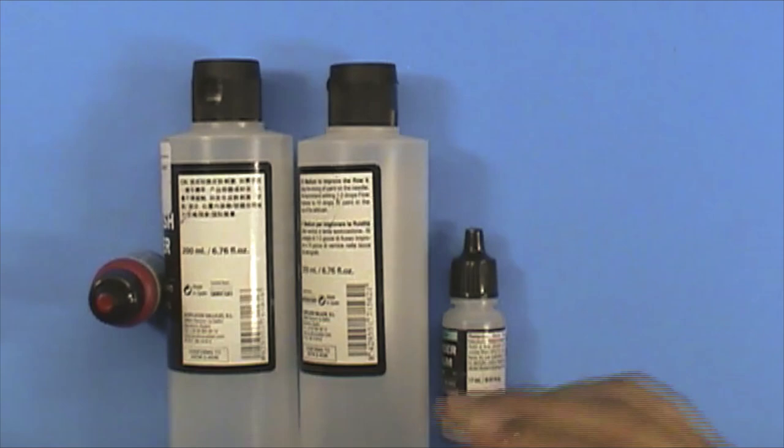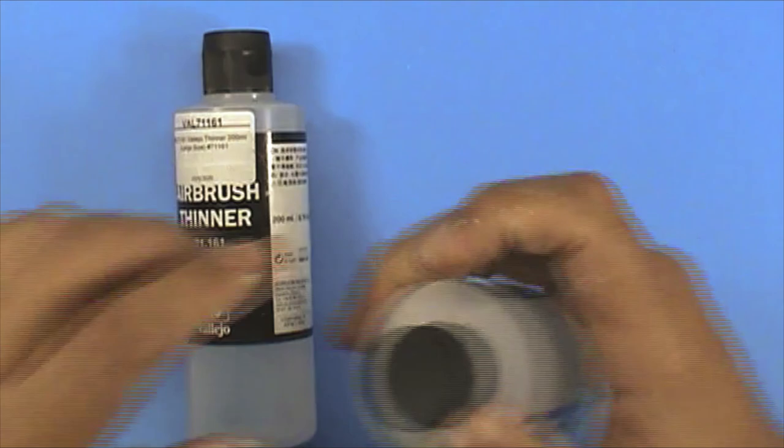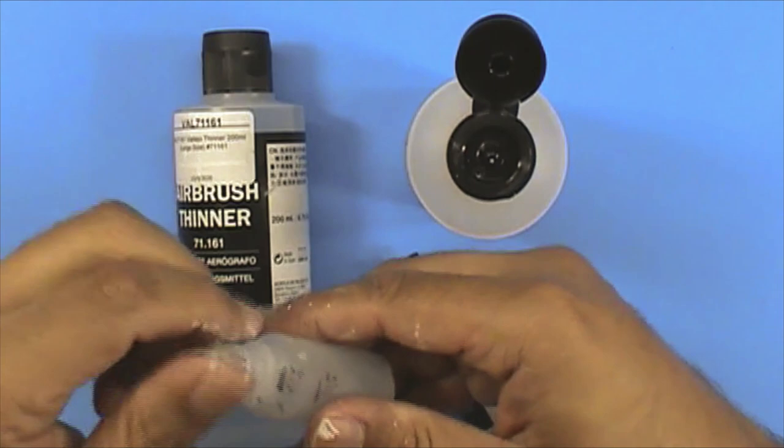So you need the airbrush flow improver. And I have a little 17 ml bottle here. It's just an easy guide and it's easy to use. That's why I use it. You can make it in whatever bottle you want.